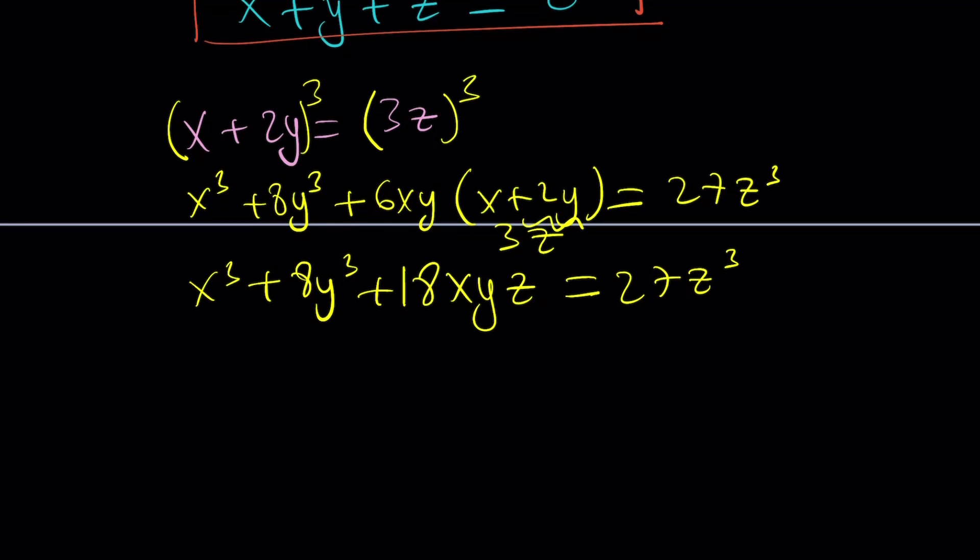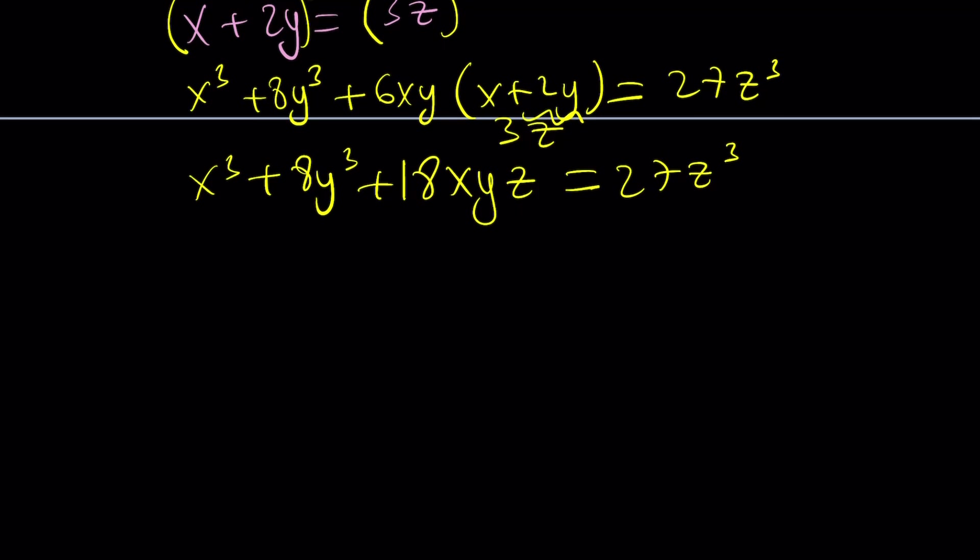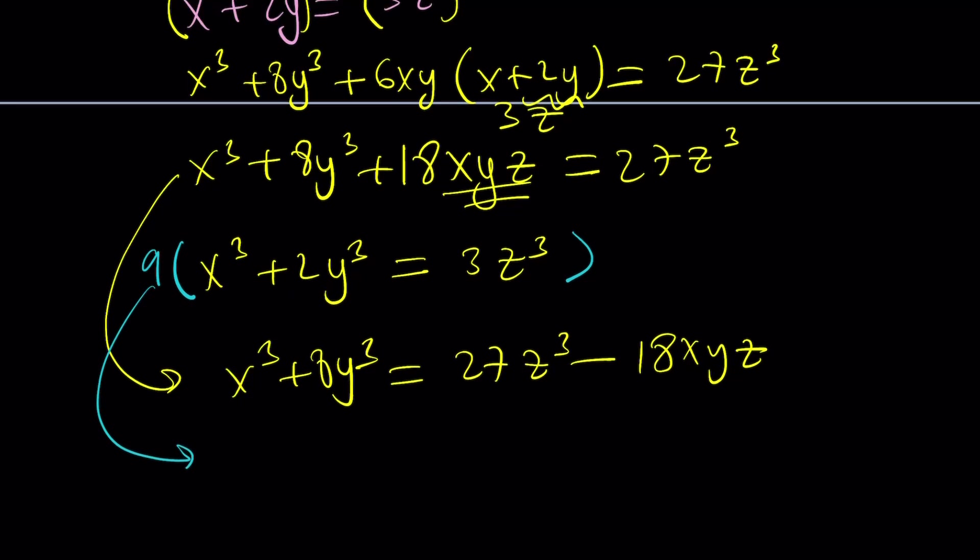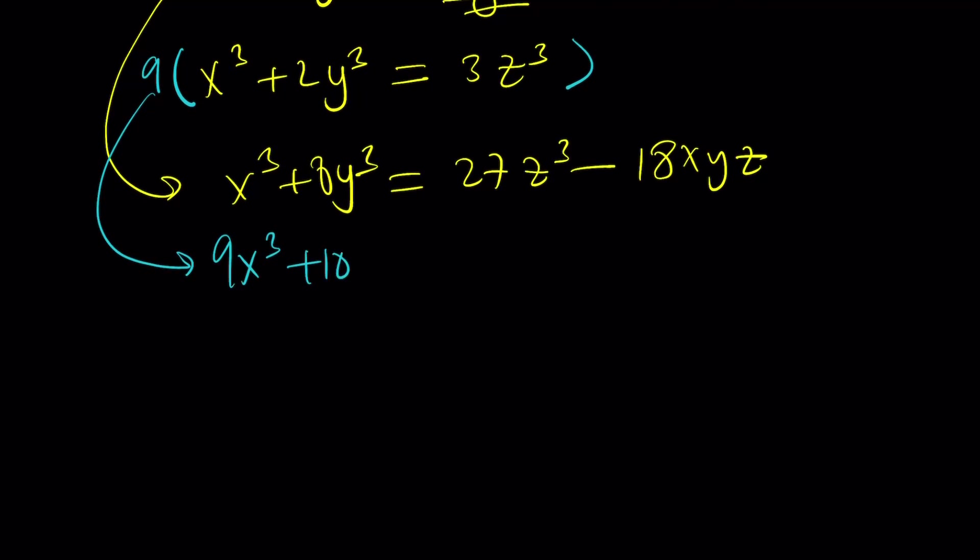Is that going to help at all? Maybe I can use the second equation one more time. What was the second equation? x cubed plus 2y cubed equals 3z cubed. Now let's go ahead and subtract this from both sides. That's going to give me x cubed plus 8y cubed is equal to 27z cubed minus 18xyz.